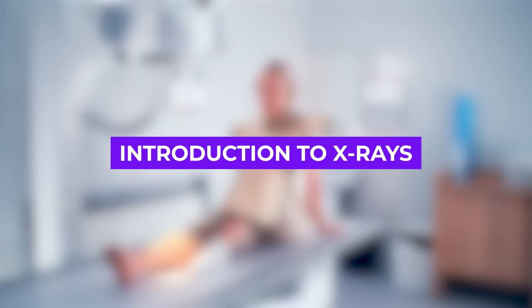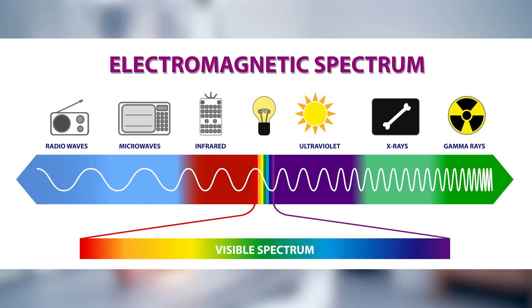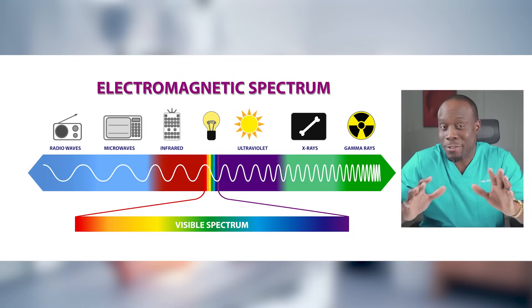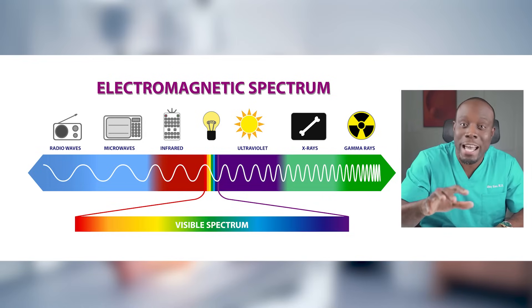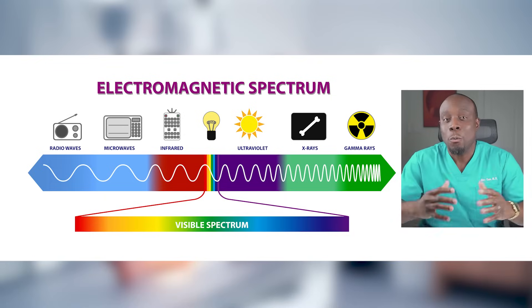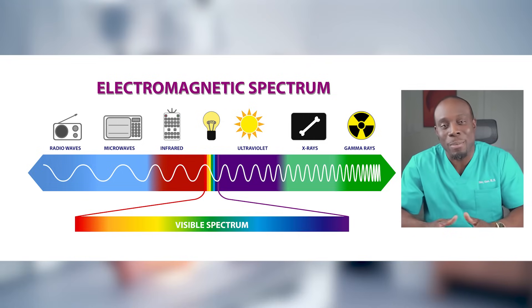First up: X-rays — a century-old technology that's become the cornerstone of medical diagnosis. In simple terms, an X-ray is a form of electromagnetic radiation. It's similar to the light you see every day, just at a different wavelength that's invisible to the naked eye. That makes it super powerful — X-rays can pass through your body and show us what's inside.